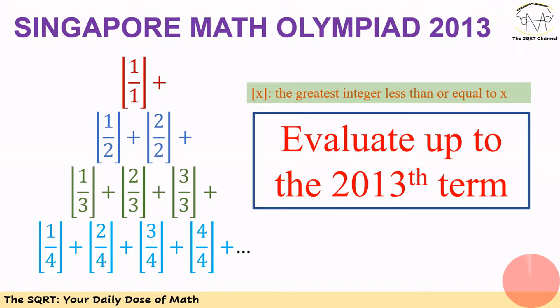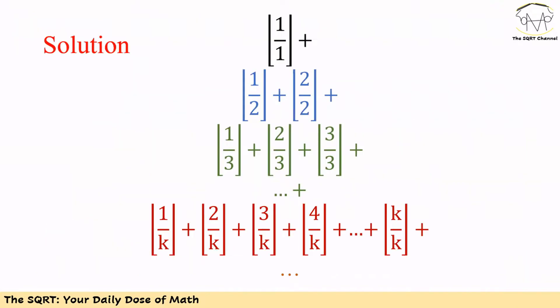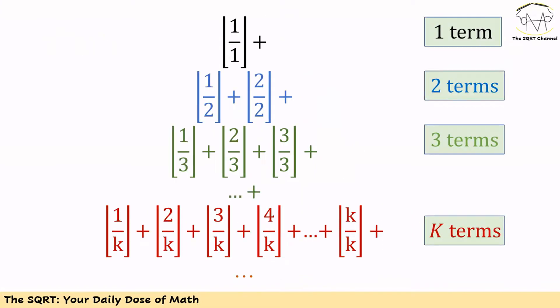Before talking about the solution, let's expand the expression. We have floor of 1 over 1, then floor of 1 over 2 plus floor of 2 over 2 — two new terms. Then floor of 1 over 3 plus floor of 2 over 3 plus floor of 3 over 3 — three new terms. In general, when the denominator inside the floor operator is K, we are going to have K terms.